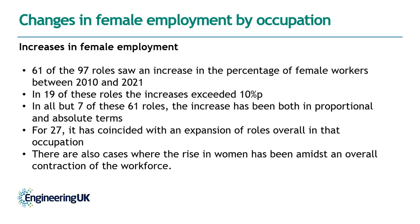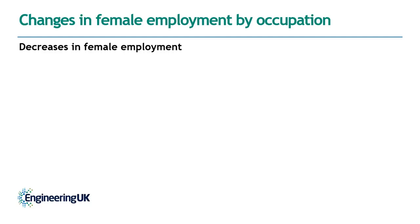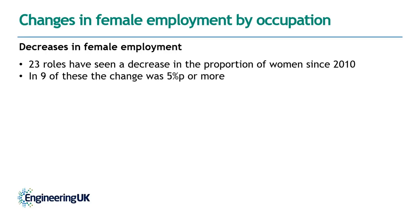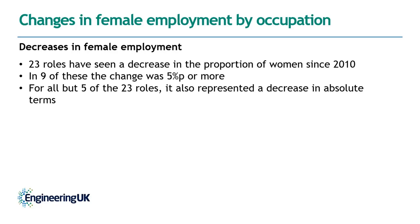Going forward, it's important to understand what's driving these opposing trends and whether there are differences in how women and men are treated in terms of recruitment, pay, contract type, or retention across different areas of the footprint. On the other end of the spectrum, 23 roles have seen a decrease in the proportion of women since 2010, with nine roles seeing a change of five percentage points or more — including inspectors of standards and regulations, assemblers, and environmental professionals. For all but five of those 23 roles, this also represented a decrease in absolute terms, meaning fewer women were working in those occupations in 2021 than in 2010.